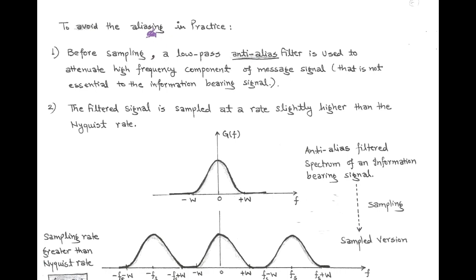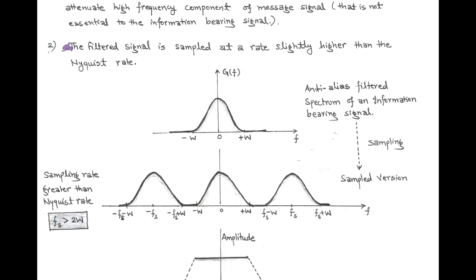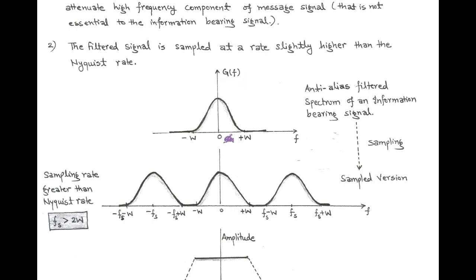So in order to avoid the aliasing effect, a low-pass anti-aliasing filter is used before the sampling process. This anti-aliasing filter attenuates high-frequency components of the message signal that are not part of the information-bearing signal. Secondly, the filtered signal — that is, the output of the anti-aliasing filter — is sampled at a rate slightly higher than the Nyquist rate. Here, capital G(F) is the filtered information signal that is band-limited to W. This anti-aliased filter spectrum goes for sampling process with a sampling rate of F greater than twice of W, and we get the sampled version.